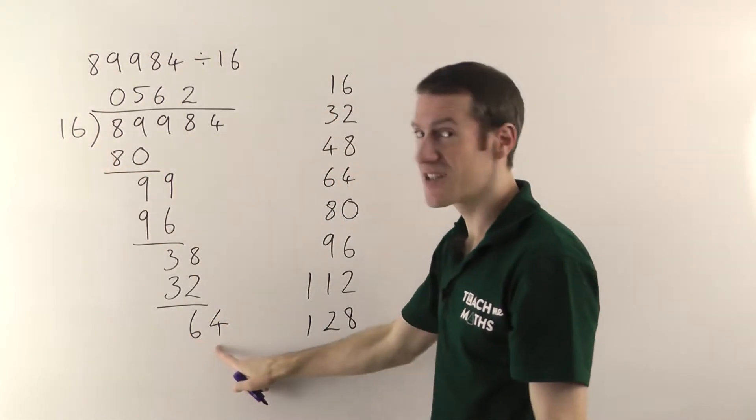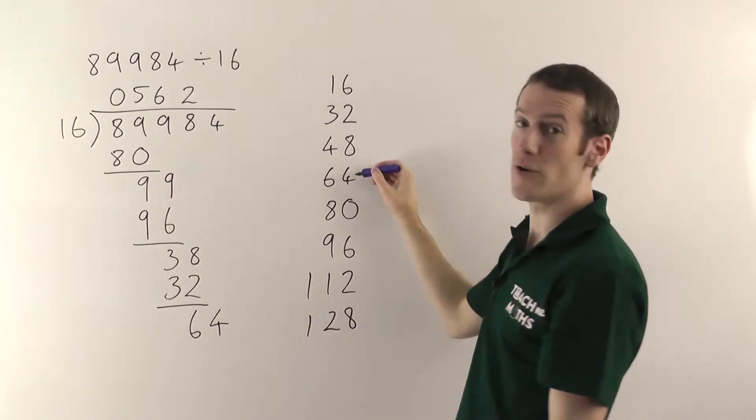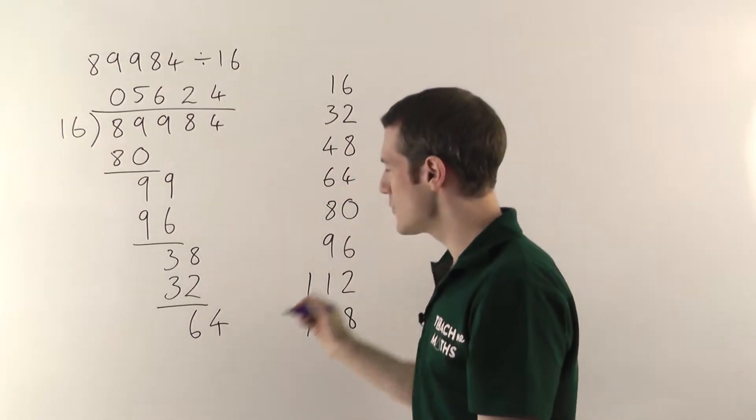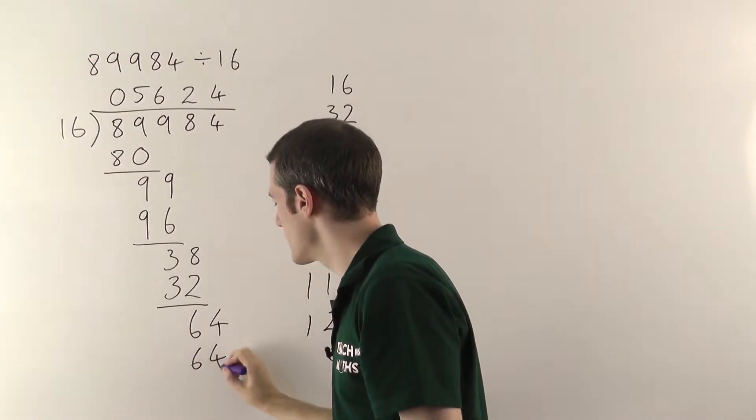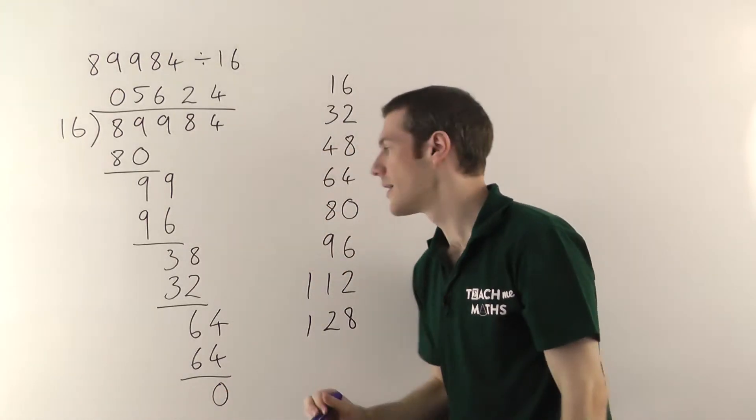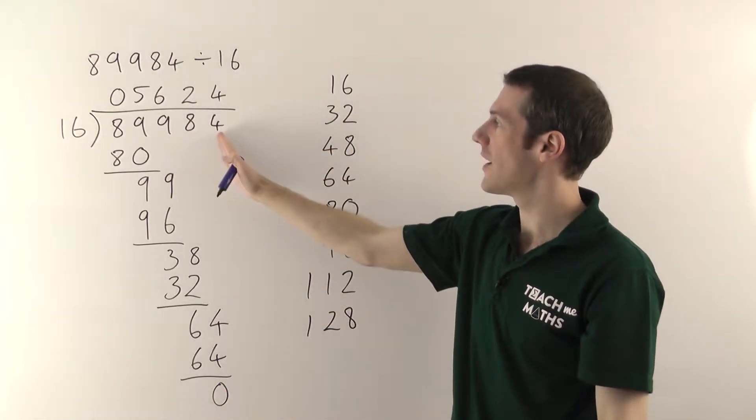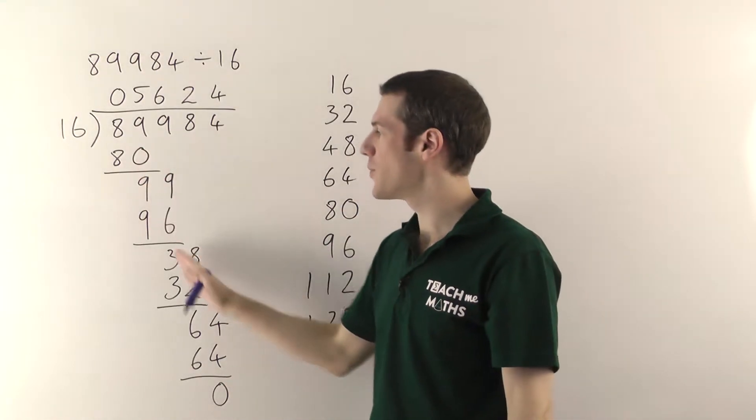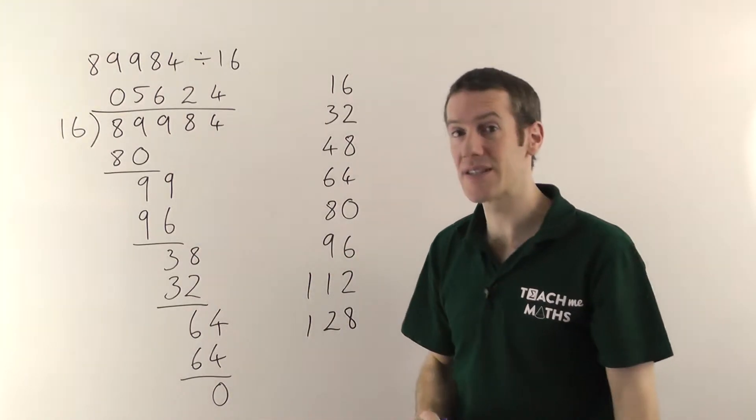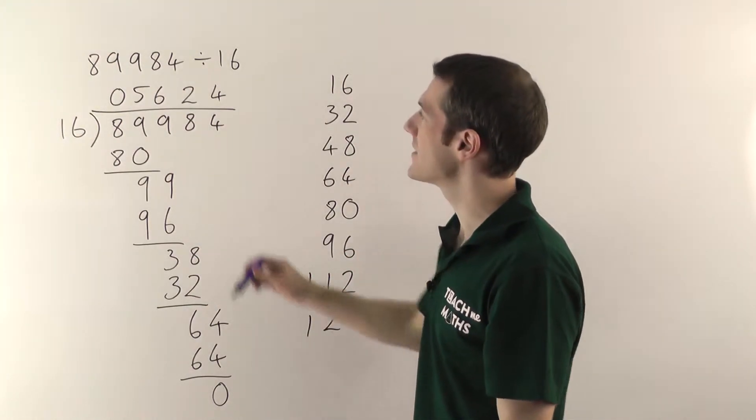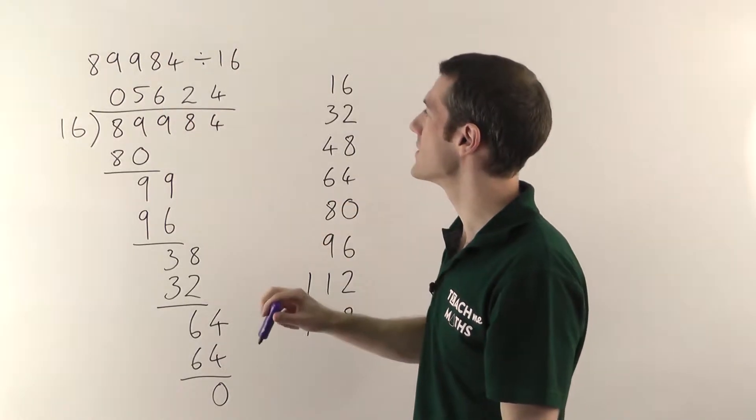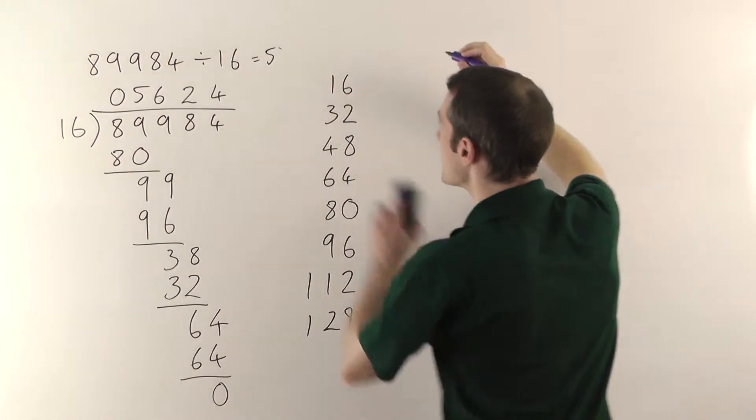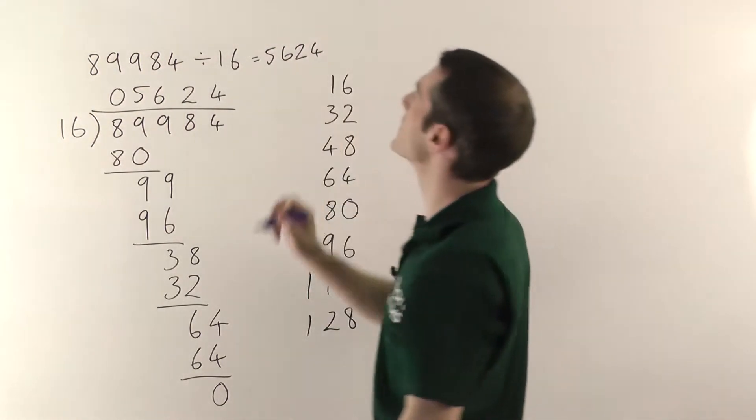And your final digit then drops all the way down to here to make sixty-four. How many times does sixteen go into sixty-four? It goes exactly four times. So you put the four there. Once you get nothing and you've run out of all your digits, that means you've finished. The final answer is five thousand six hundred and twenty-four.